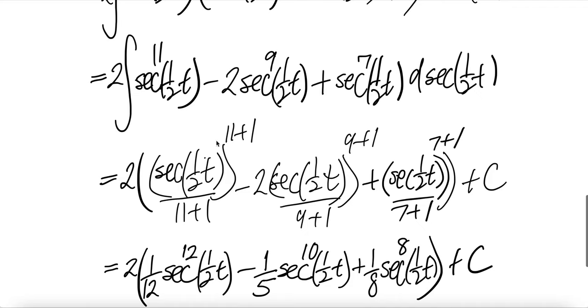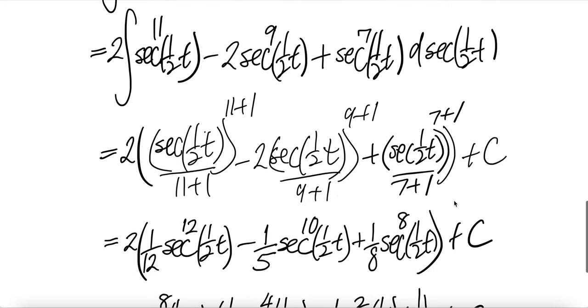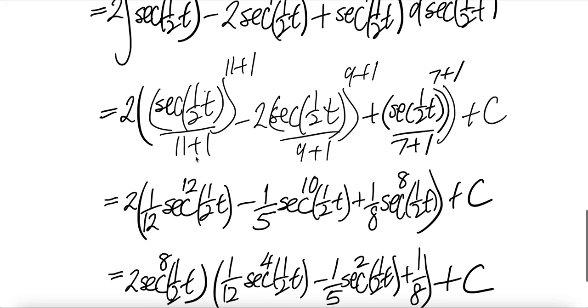Integral of sum or difference is sum or difference of integrals. The integral of this is sec half t, eleven plus one over eleven plus one. Here will be sec half t, nine plus one over nine plus one. Here will be seven plus one over seven plus one. Eleven plus one is twelve upstairs, twelve downstairs.